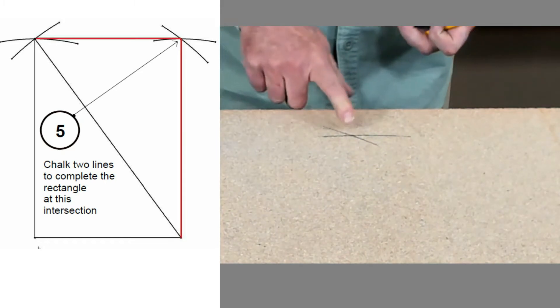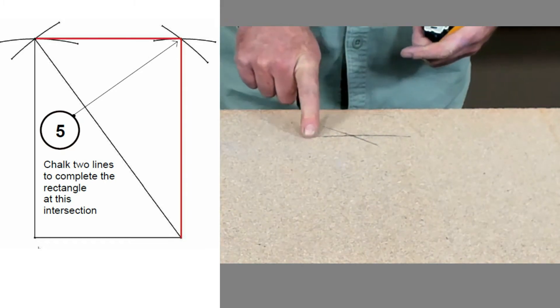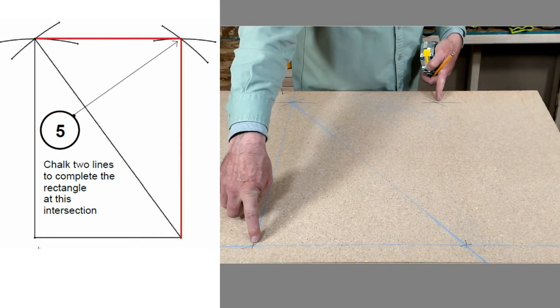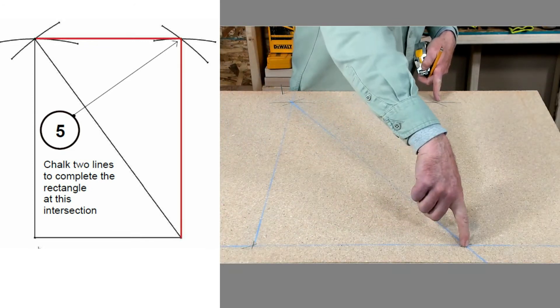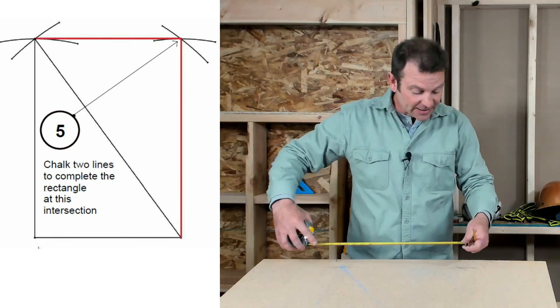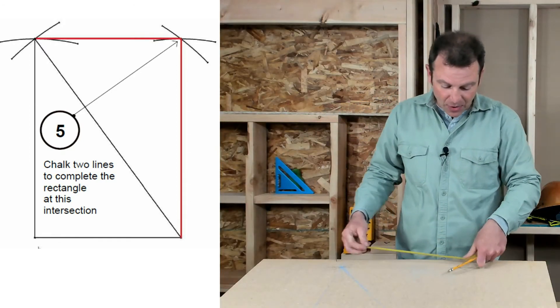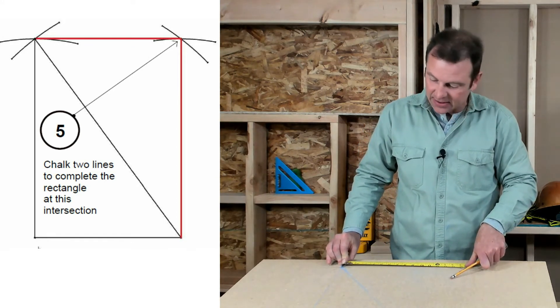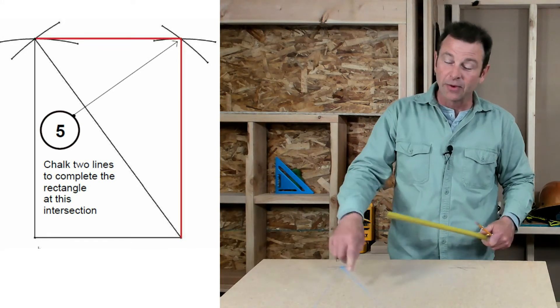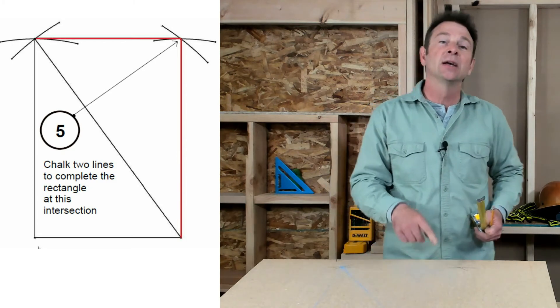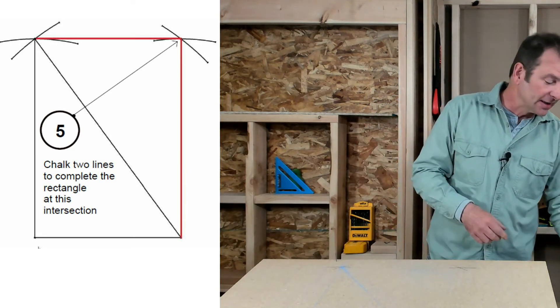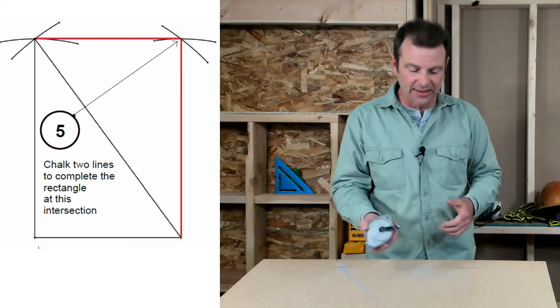And once again, we have X marks the spot. Wherever these two arcs meet is exactly 25 inches from this corner and it's exactly 20 inches from this corner. As this goes, that mark will also be, should be 15 inches from this corner. So what we've created is a duplicate triangle that matches the first one that we did. Let's go ahead and chalk these lines and it'll be a little easier to see it.